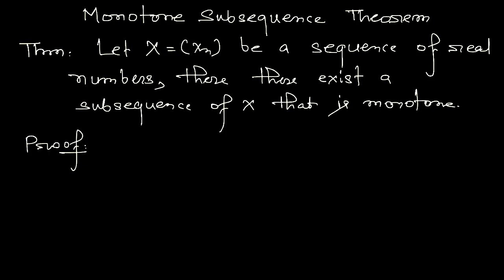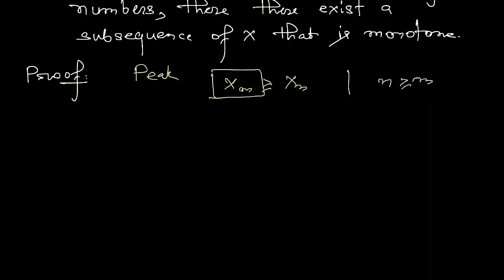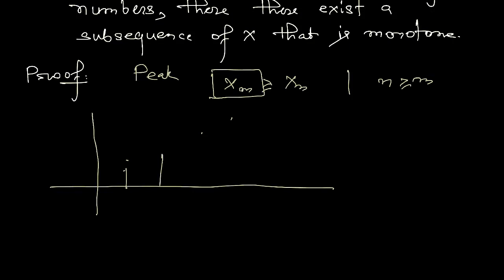Let's see the proof. In order to prove this theorem we have to understand the concept of a peak. A term xm is called a peak if it is larger than all other terms which come after it. For example, in an increasing sequence, the terms keep growing, so no term is a peak because all subsequent terms are larger.